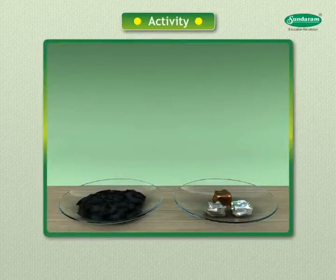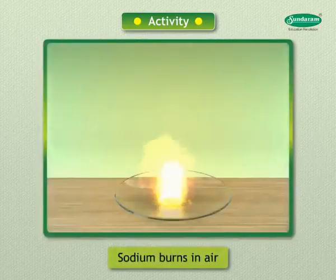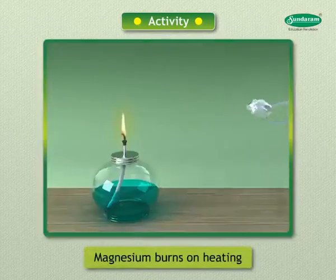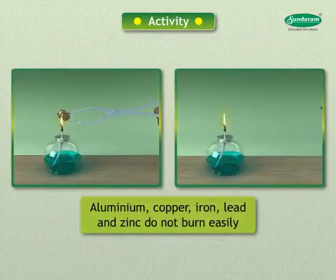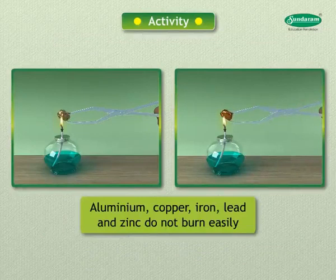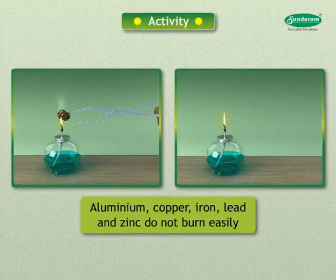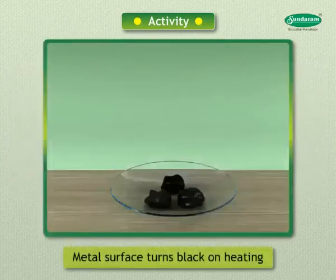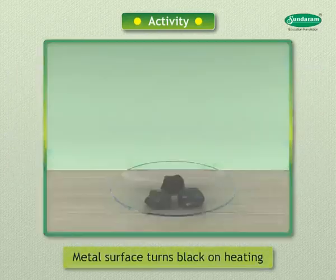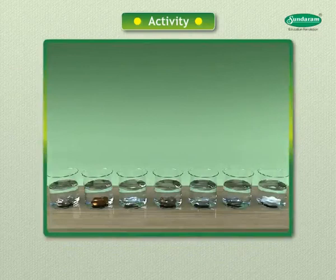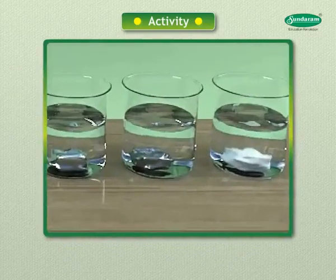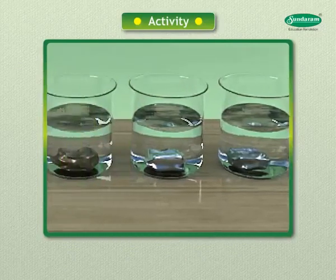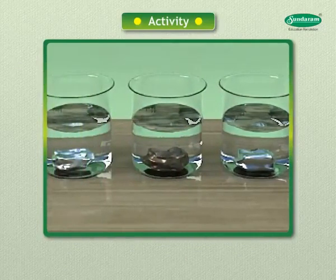Let the product and the metal surface cool down. Which metals burn easily? Sodium burns in air; magnesium burns on heating. Aluminium, copper, iron, lead, and zinc do not burn easily. The metal surface turns black on heating. Only sodium oxide is soluble in water; other products are not soluble in water.